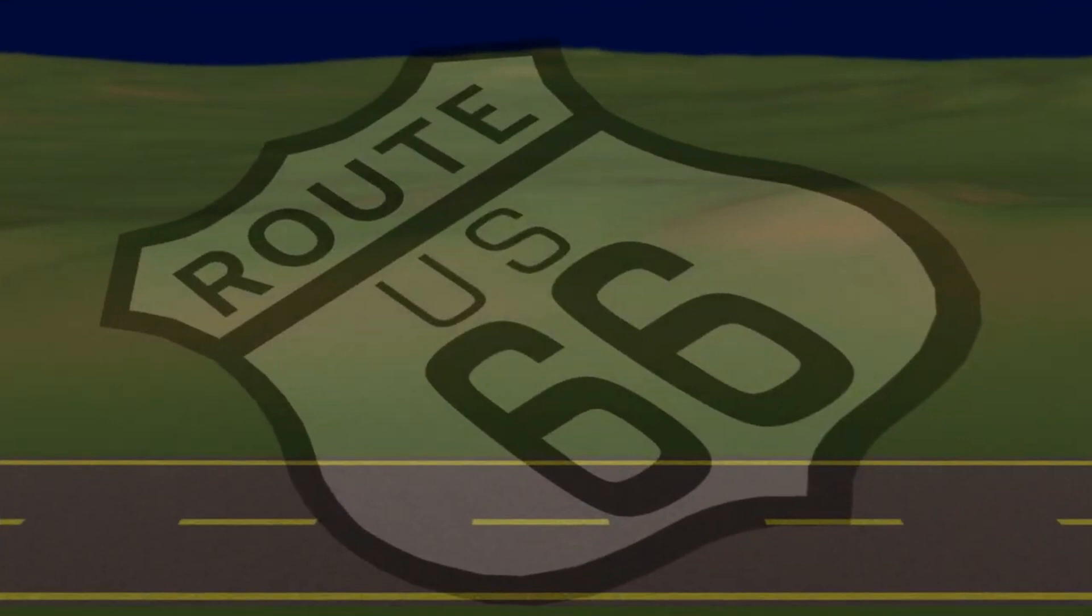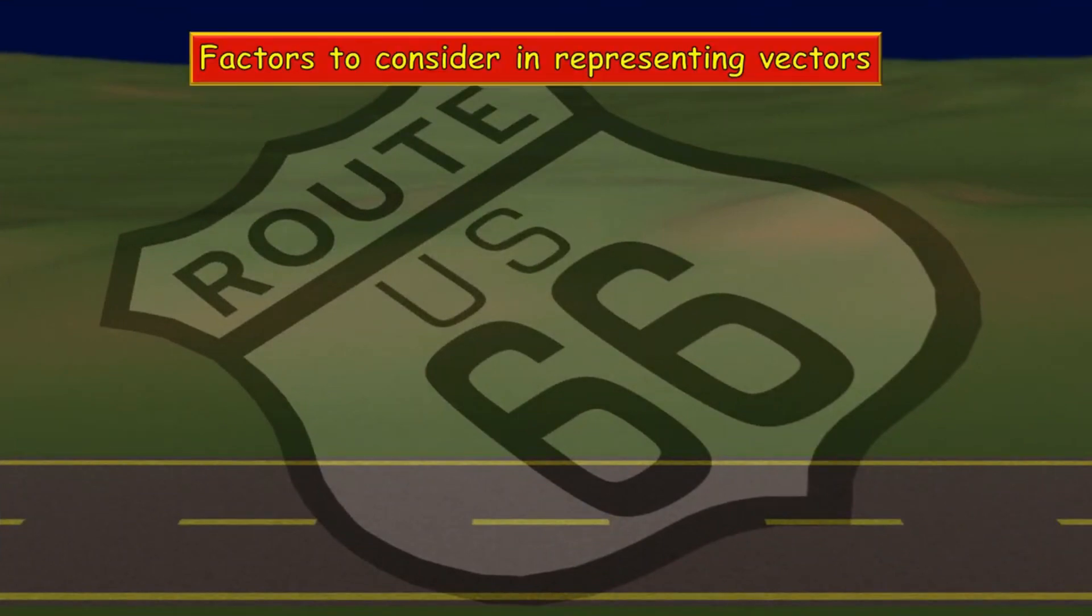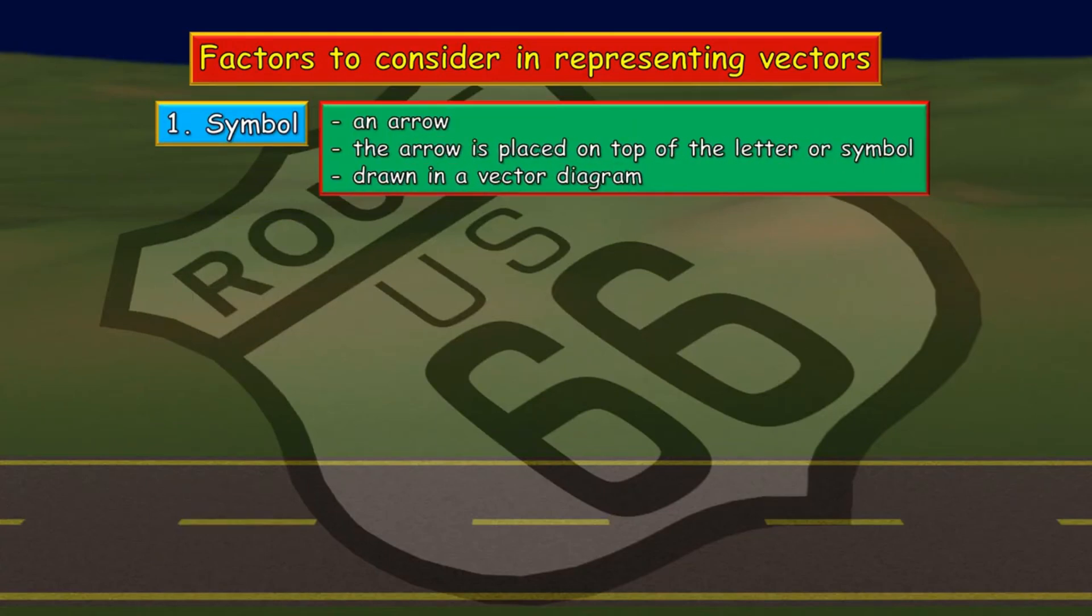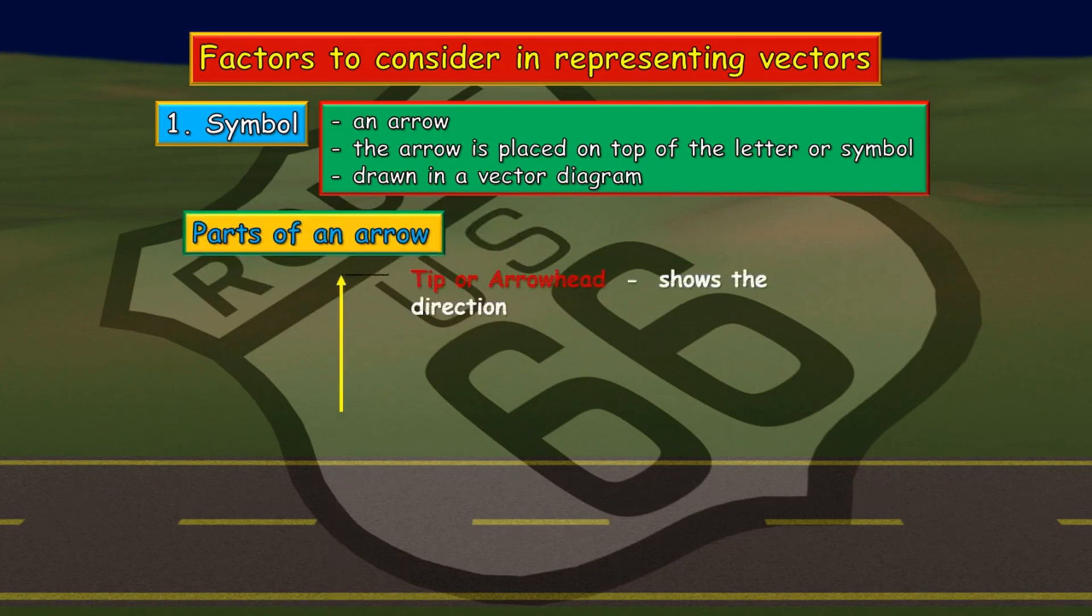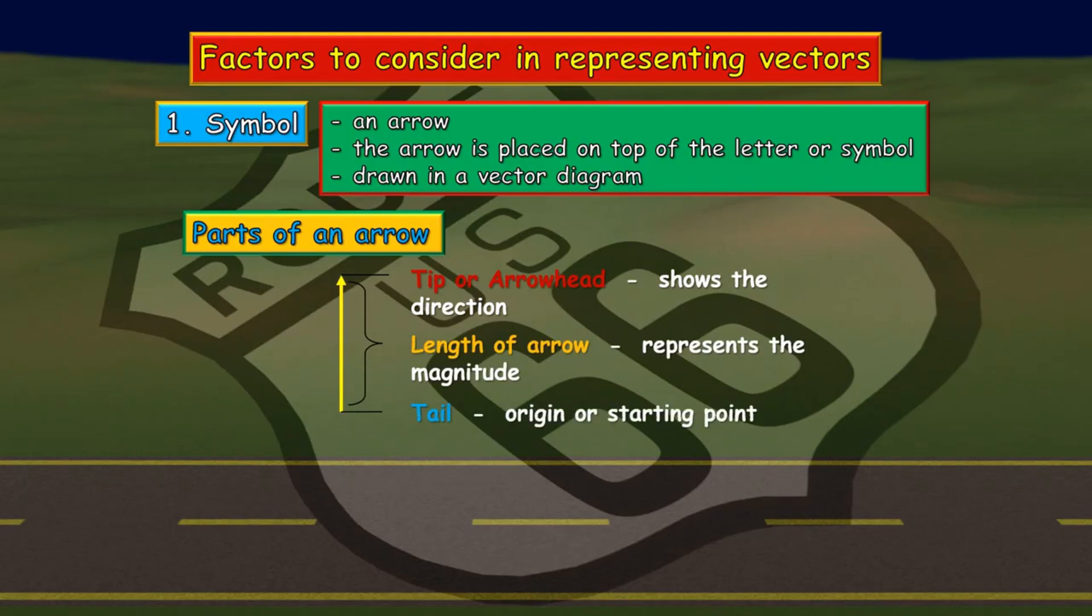In representing vector quantities, there are factors that we need to consider. The first one is symbol. Commonly, we symbolize a vector through the use of an arrow. The arrow is placed on top of a letter or symbol and drawn in a vector diagram. Here are the parts of the arrow. First is the tip or the arrowhead which shows the direction. Next is the length of arrow which represents the magnitude. And the tail which is the origin or the starting point.